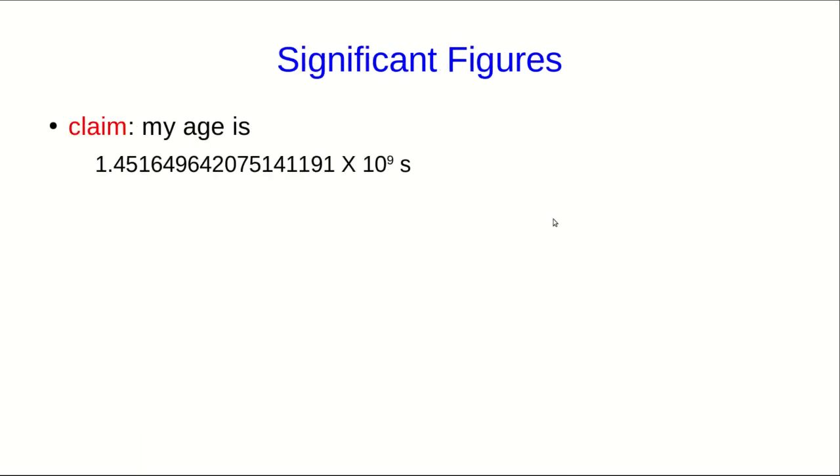Now let's move on to significant figures, and I'm going to start by making a claim. I claim that my age is 1.451649642075141191 times 10 to the 9 seconds. My question is, do you believe me? Well, aside from wondering what sort of nut would give you their age in seconds, you might sensibly convert this to years and find that it's about 46 years, which seems plausible. But there's still something very wrong with this claim. If you count digit, the ones place is right here. All the digits past that are smaller and smaller fractions of a second. So in fact, the last digit represents nanoseconds. I've given you my age to the nanosecond. Do you believe I know my age to the nanosecond?